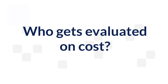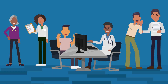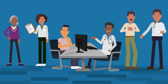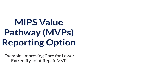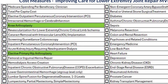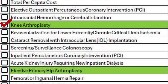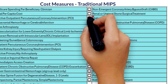All clinicians who report traditional MIPS or a MIPS Value Pathway, or MVP, and are not participating as part of an Alternative Payment Model, or APM entity, are evaluated on cost. Each MVP includes cost measures that are relevant and applicable to the MVP clinical specialty or medical condition. Clinicians who report an MVP are scored on all cost measures they meet the case minimum for within their MVP. In traditional MIPS, clinicians are scored on all cost measures that they meet the case minimum for.